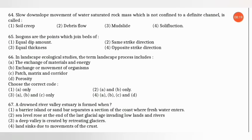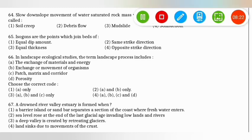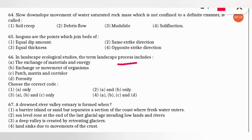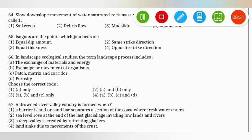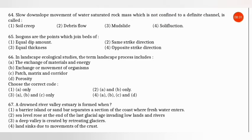The next question: in landscape ecological studies, the term 'landscape process' includes what? The correct option is option 2 — only A and B: exchange of materials and energy, and exchange or movement of organisms are included under landscape processes.